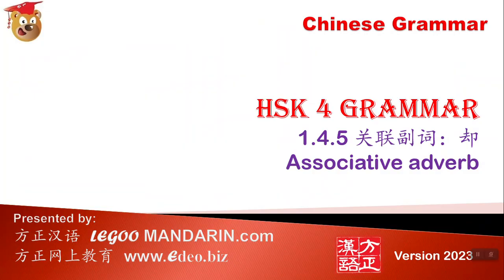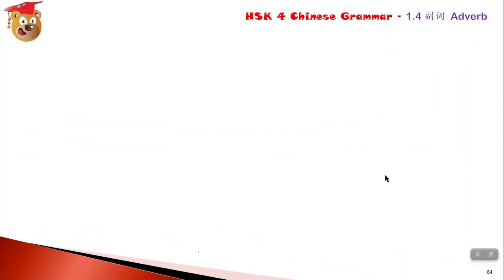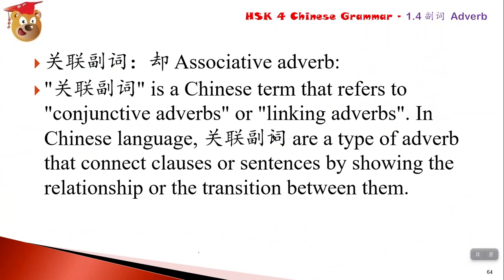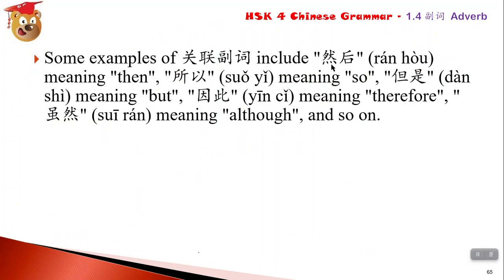Part 5 is 关联副词 - connective or associative adverbs. 关联 means something with connections - these are conjunctive or linking adverbs. Examples include: 然后 (then), 所以 (therefore), 但是 (but), 因此 (because of this / therefore), 虽然 (although), and 却 (however/but).